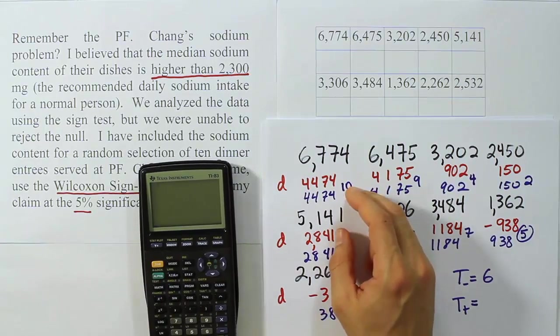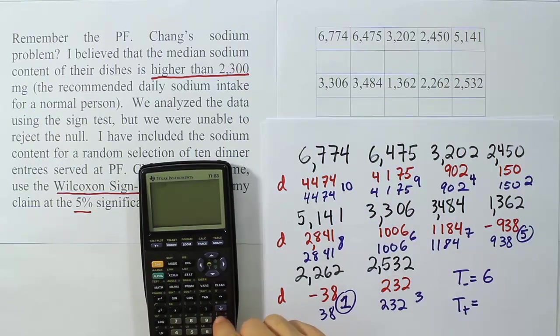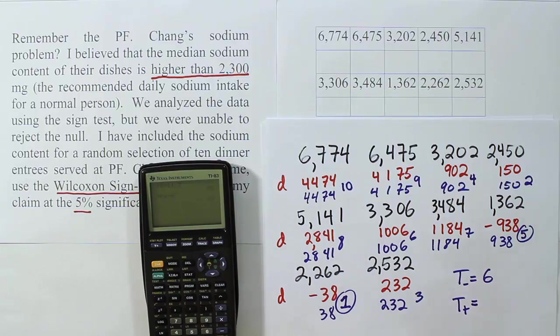All the others have to be T positive. So we can add them up or we can use our trick to check what the answer should be. Let's do the trick to check. There are 10 values, so there are 10 ranks given out, 1 to 10. So the total number of ranks should be 10 times 11 divided by 2. In other words, it'll be 5 times 11. We should get 55. 55, sure enough, is the answer. So I'm expecting that this will be 55 minus 6, since the two have to add up to the total 55. This should probably be 49.